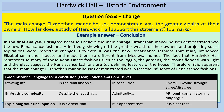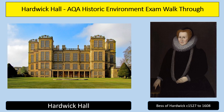Now for the conclusion. Start off with a phrase like 'in conclusion' or 'in the final analysis', embrace the complexity of the question, and be clear on your overall opinion. 'In the final analysis, I disagree because I believe the main change Elizabethan Manor Houses demonstrated was the new Renaissance fashions. Admittedly, showing off the greater wealth of their owners and projecting social aspirations were important changes. However, it was the new Renaissance fashions that really influenced Elizabethan Manor Houses and made them so different from medieval homes. The fact that Hardwick Hall represents so many of these Renaissance fashions — such as the loggia, the gardens, the rooms flooded with light and the glass — suggests that Renaissance fashions are the defining features of the house. Therefore, it's apparent the main change Elizabethan Manor Houses demonstrated was the influence of Renaissance fashions.' Thanks very much for listening to that revision video and good luck with the exams.